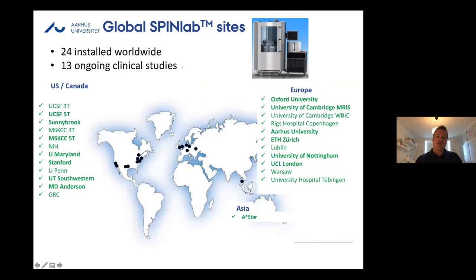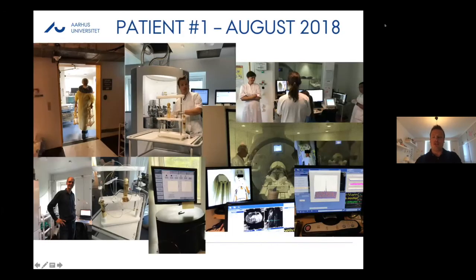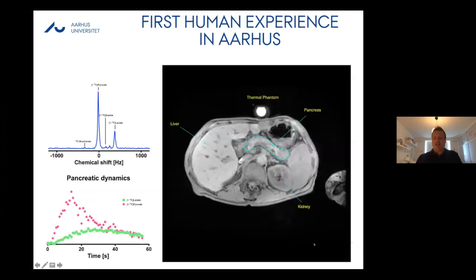Those 32 patients were actually scanned with that preliminary version, which was eventually transformed into the clinical SpinLab now placed around the world and being used for clinical studies. Worldwide there are 24 of these installations, and currently 13 of these groups are doing human studies — quite a lot. We are one of them, and this shows images from the day we did our first patient, with Ian Henrik — the inventor of the technology — visiting for the occasion.